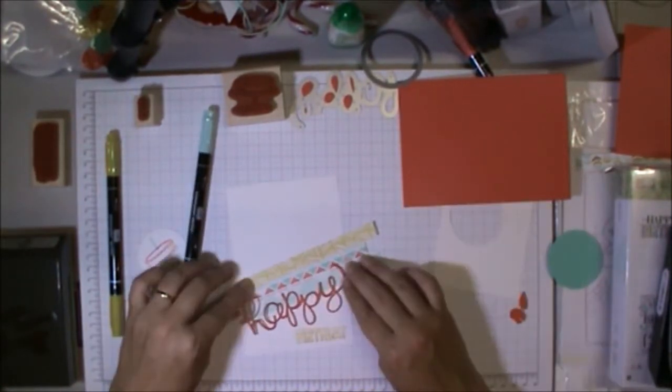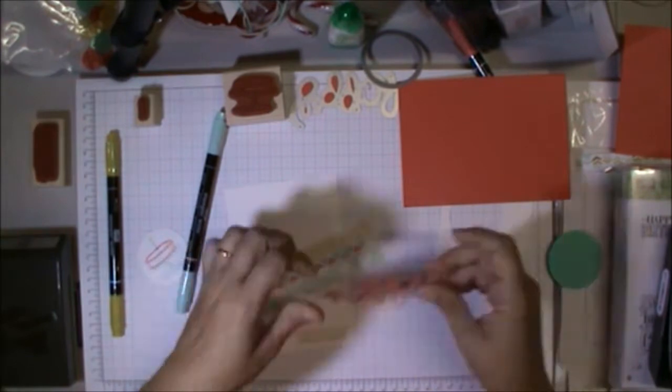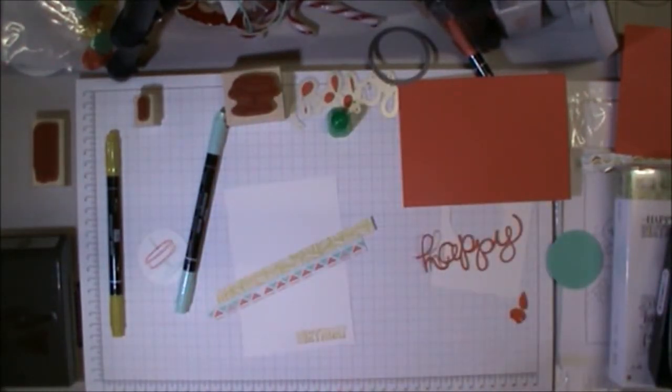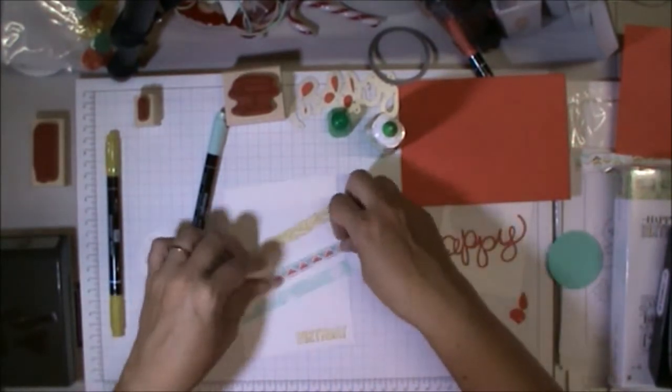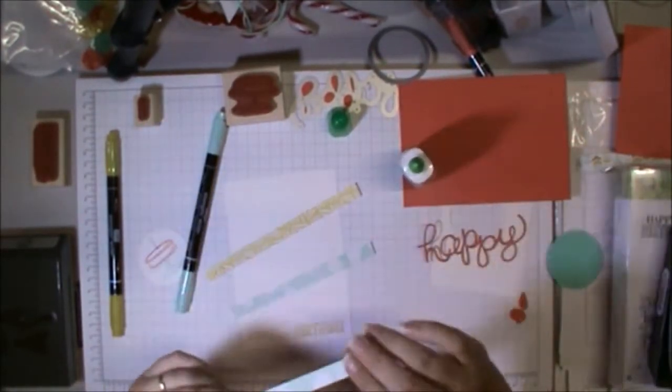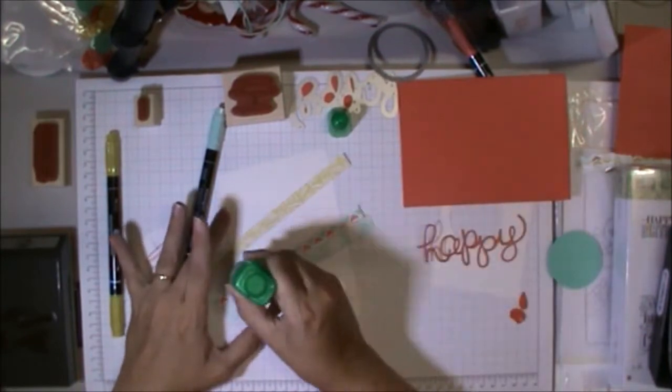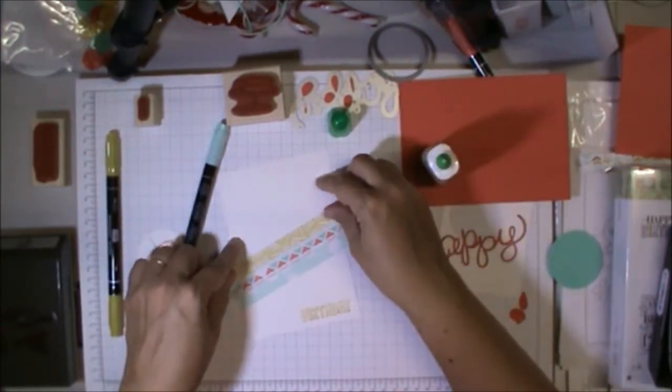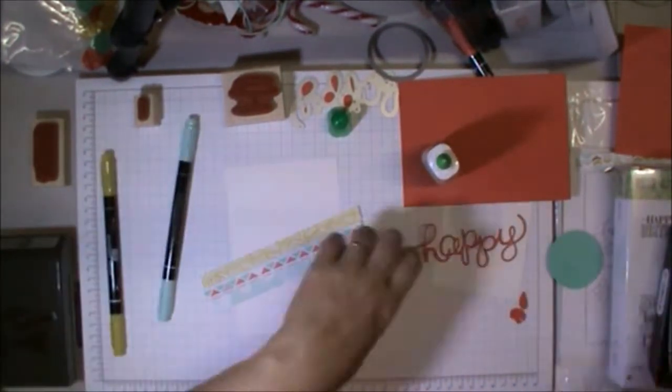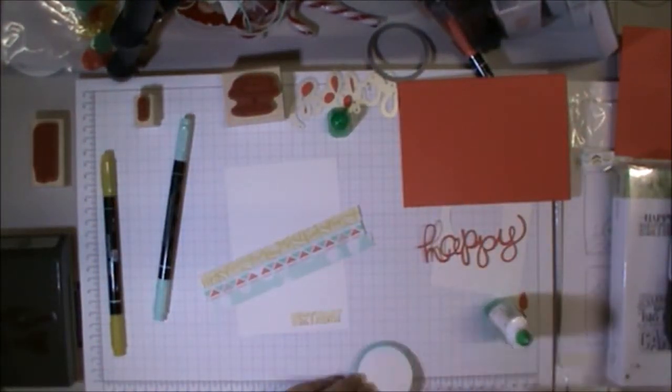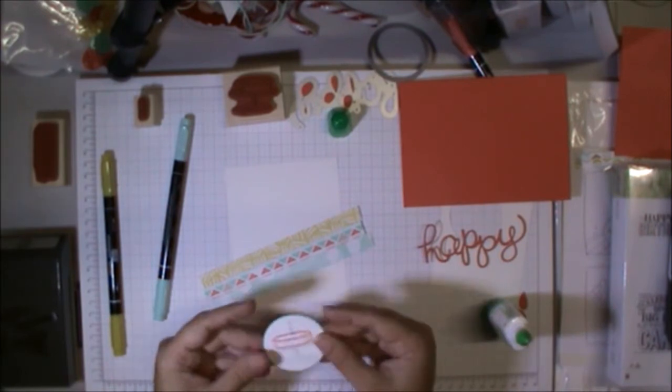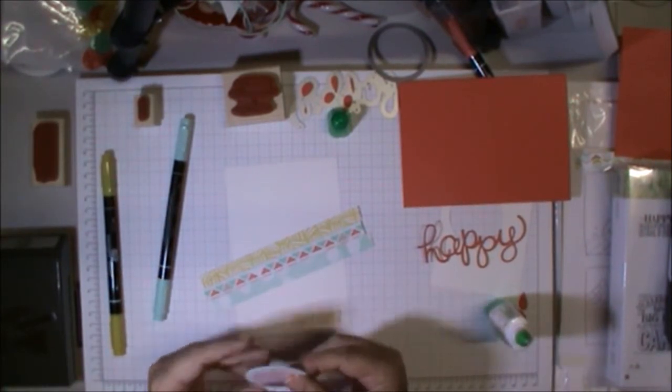I stamped my little birthday down the bottom. Then I had some strips here from the Best Year Ever paper range, which is another item from Sale-A-Bration. It's absolutely gorgeous paper. I just cut a few strips from there and put them onto a background of Whisper White.